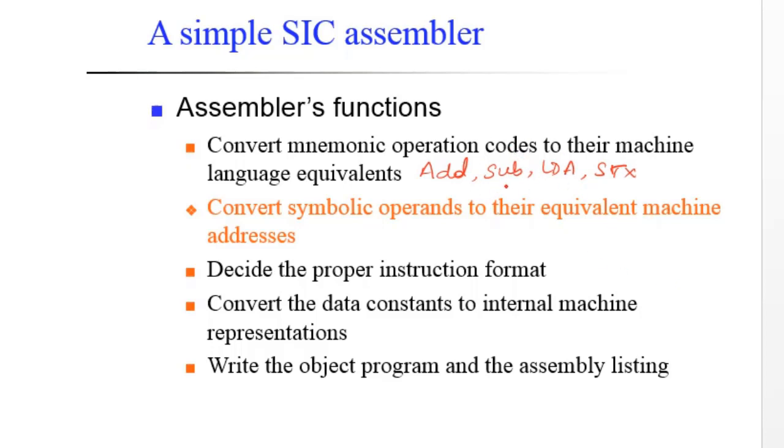They are converted into machine language equivalents. When I say machine language equivalents, we will have binary number which is equivalent for each instruction supported by the architecture. So the primary job of the assembler is to convert mnemonic operation codes like this into its binary equivalent.